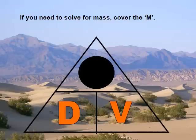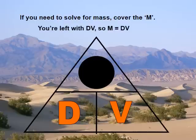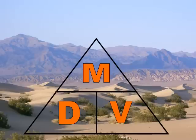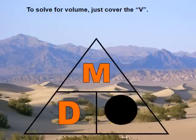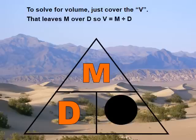If you need to solve for mass, so you have the density and you have the volume, you cover the mass. And density and volume are now on the same row, right? They're at the same level. So now mass is equal to density times volume. And finally, when you need to solve for volume, you cover the V. And now you've got mass above and density down below. So volume is equal to mass divided by density.